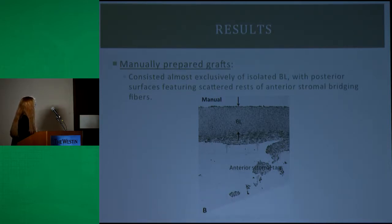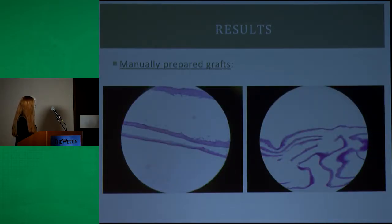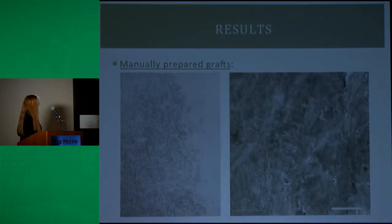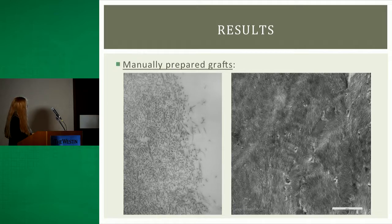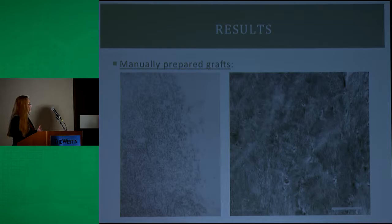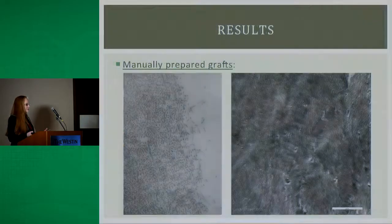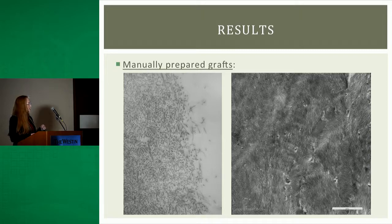For comparison, here are manually prepared grafts. You can see that these are a lot thinner — it's pretty much your anatomical Bowman layer with a couple of rests of anterior stromal tags connected to the posterior surface. TEM images also show the interdigitated, randomly organized collagen fibrils characteristic of Bowman layer, as well as small areas of disruption caused by the necessity of repeatedly grasping Bowman layer during peeling — an artifact of the manual dissection technique.